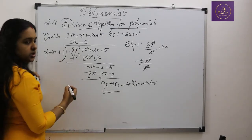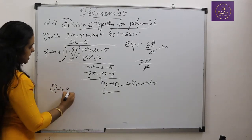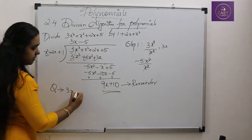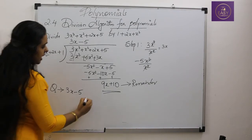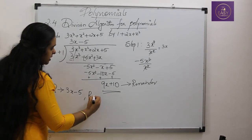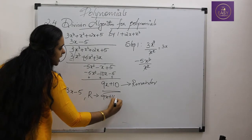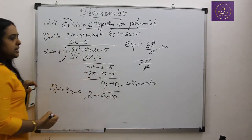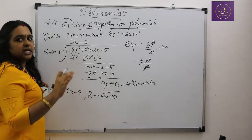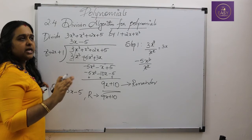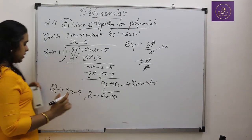So our quotient is 3x − 5 and our remainder is 9x + 10. Now we will verify whether dividend equals divisor into quotient plus remainder.